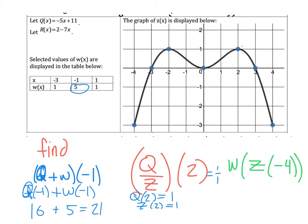And then finally, we've got w of z of negative 4. This is composition, so we're going to find z of negative 4 first. z of negative 4 is going to be negative 3. And what we're doing then is finding w of negative 3. And if I take a look at my table, w of negative 3 is going to be 1.